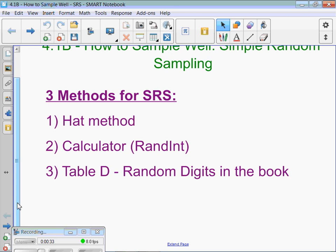Calculator method, same thing. You need to say I'm going to label every individual in the class 1 through 20, and then I'm going to use my calculator or technology random integer from 1 to 20. And you have to state skipping repeats. You have to say exactly what you're doing.